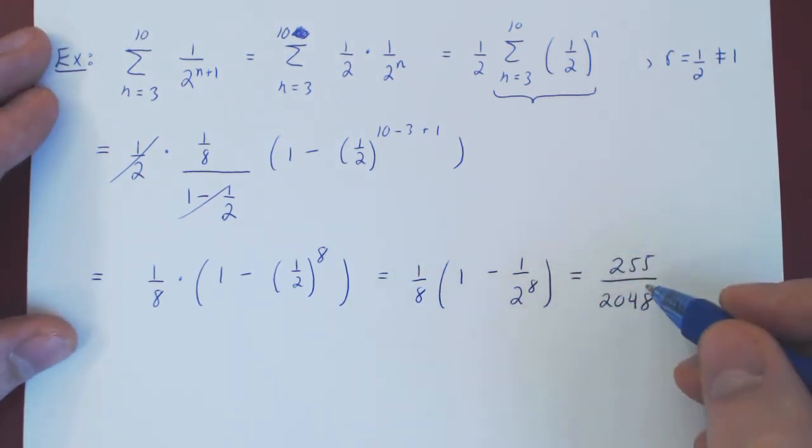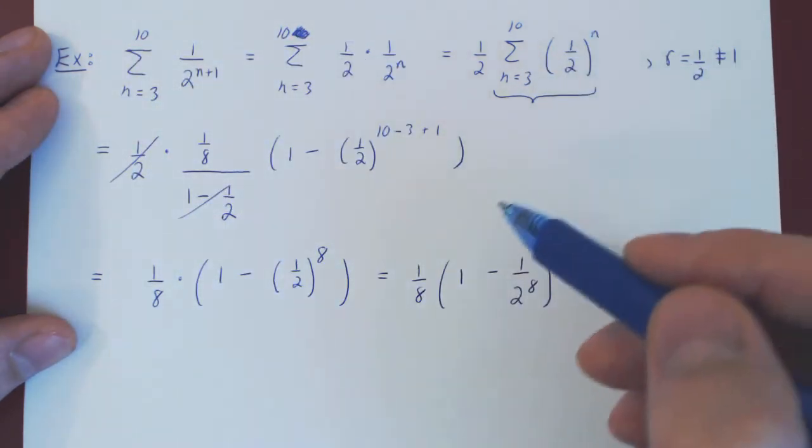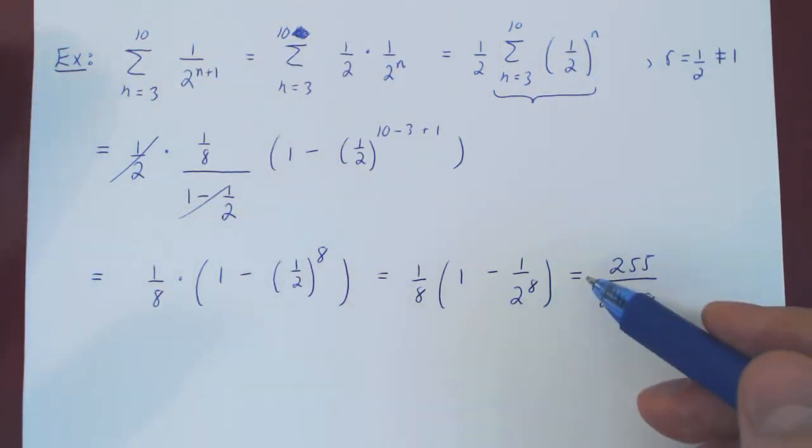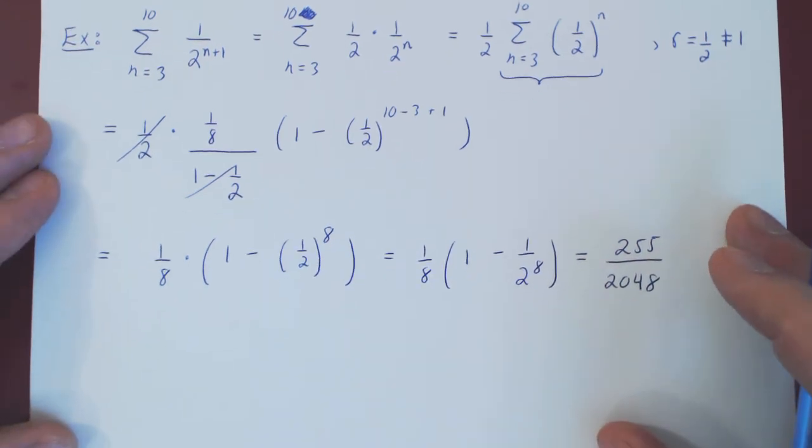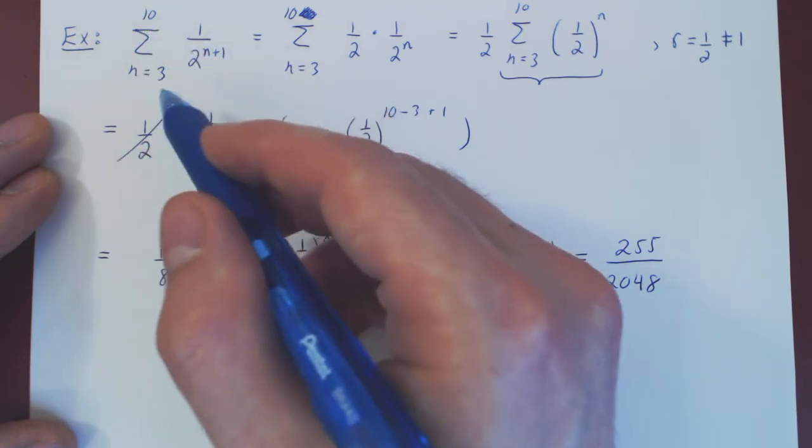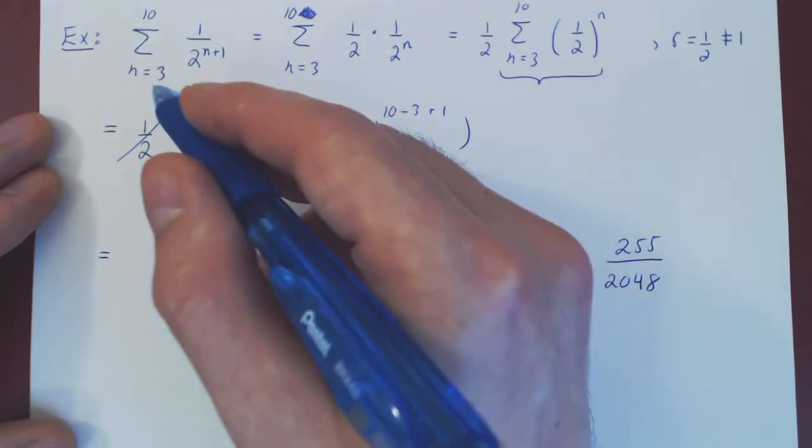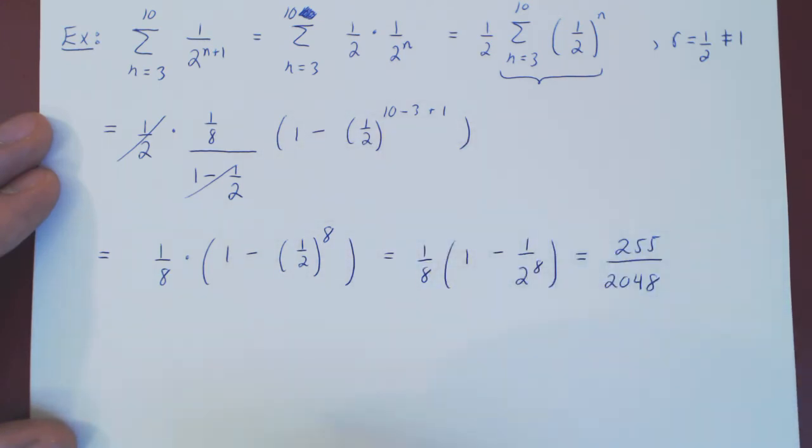And that is the exact value of our finite geometric sum. And again, to make this slightly more concrete, you can expand the series, and here it's actually a finite sum. So you can expand the whole thing out, and there's only 8 terms, so it's not too much work.